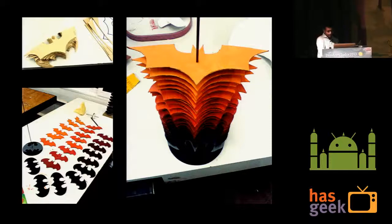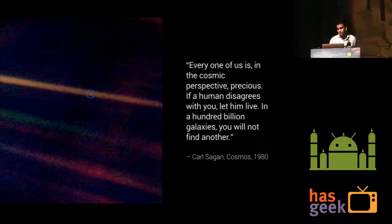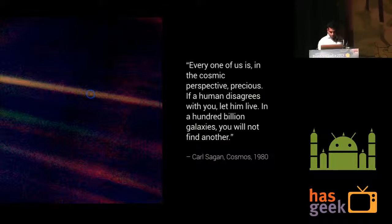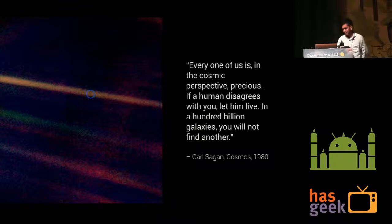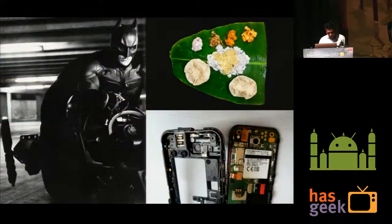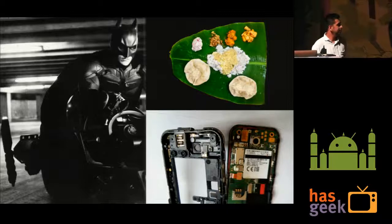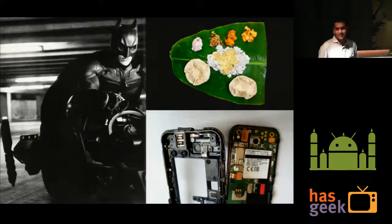I'll leave everyone with a quote from one of my favorite authors, Carl Sagan, who wrote Pale Blue Dot, which talks about the universe and humanity's relationship with the galaxies. Next, I'll show something a little different — things I value and care about, which might be immensely useful if we ever get a chance to work together: the South Indian Thali, rice, taking apart Android phones bit by bit, and of course Batman.